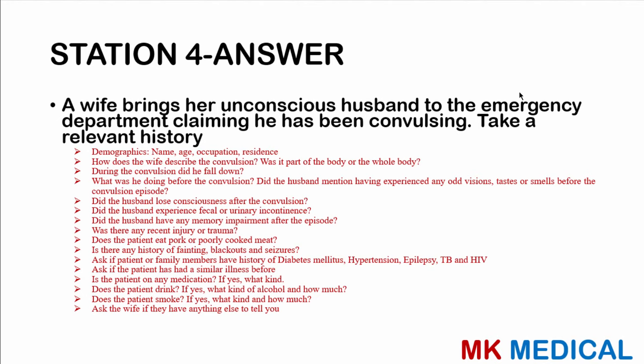Does this patient eat any pork or poorly cooked meat? Is there any history of fainting or seizures before? Ask about personal and family history of diabetes, hypertension, especially epilepsy, tuberculosis, and HIV — this could be a CNS opportunistic infection. Ask about medications, as some can predispose to convulsions — what kind, what dosage, and are they taking it? Ask if this patient drinks or smokes. Ask the wife if the husband has taken anything else aside from his usual medications.